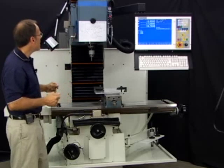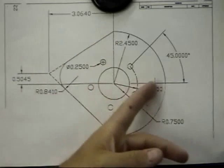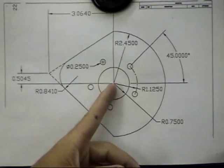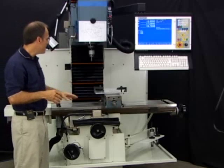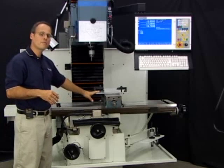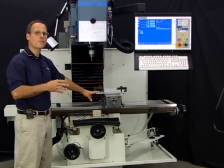Well, in this case, it looks like a pretty good spot to pick is the center of this circular pocket. A big reason for that is I made up ahead of time a fixture to hold the stock for this particular part.